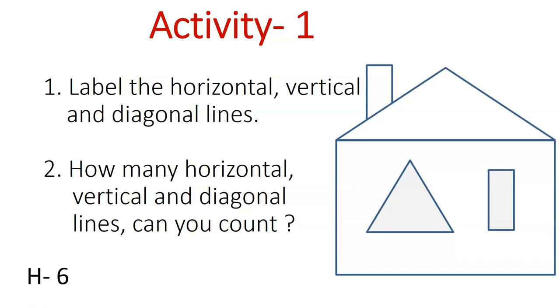Time is up, now let's reveal the answers. There are six horizontal lines: one here on the top of the chimney, one, two, three, four, five, and six.